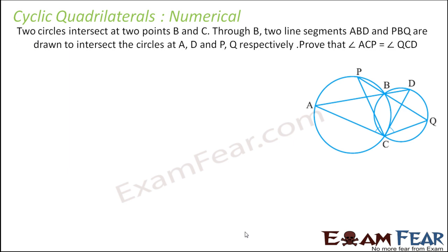Two circles intersect at points B and C. Through B, two line segments ABD and PBQ are drawn to intersect the circles at A, D and P, Q respectively. Prove that angle ACP is equal to angle QCD.